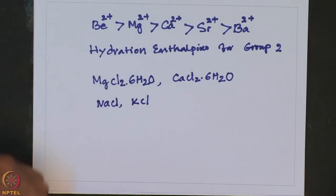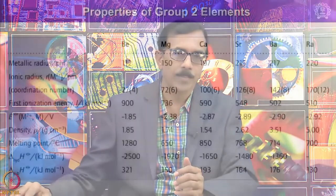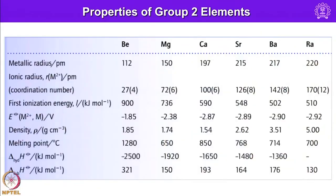Similar to group 1 metals, group 2 metals are also silvery white in color and soft, but harder than group 1 elements. The relatively greater hardness comes from the availability of 2 electrons for metal-metal bonding. Group 2 elements display strong electropositive properties, and this trend increases down the group. All these properties can be clearly seen in a tabulated summary.